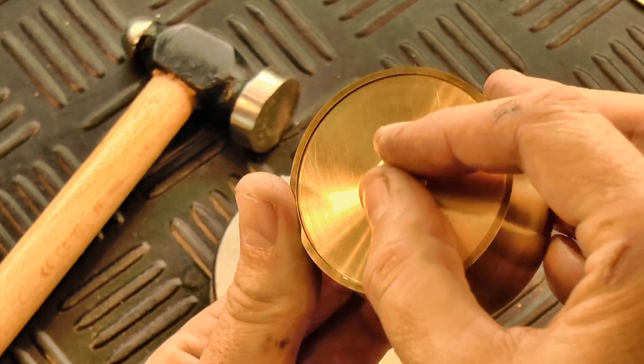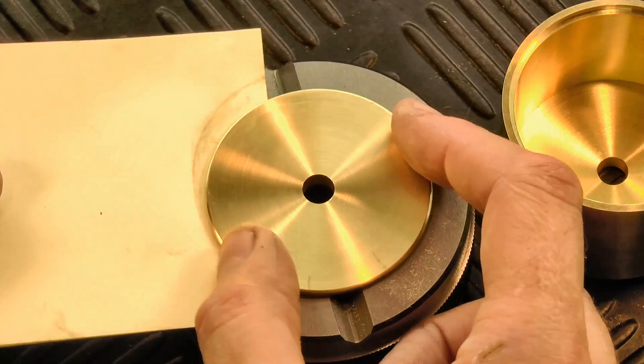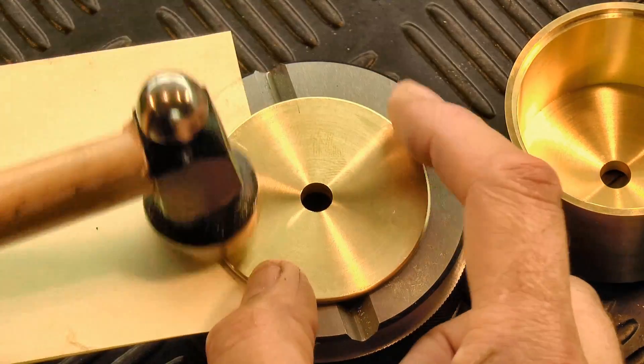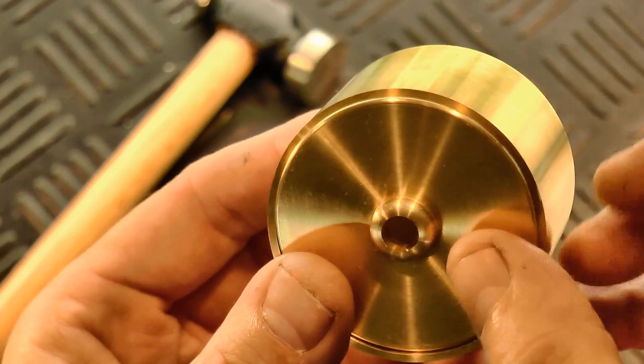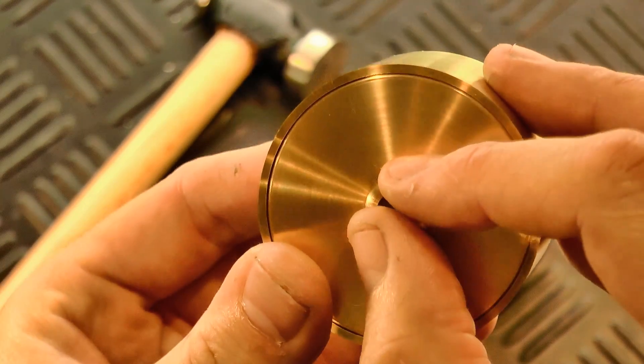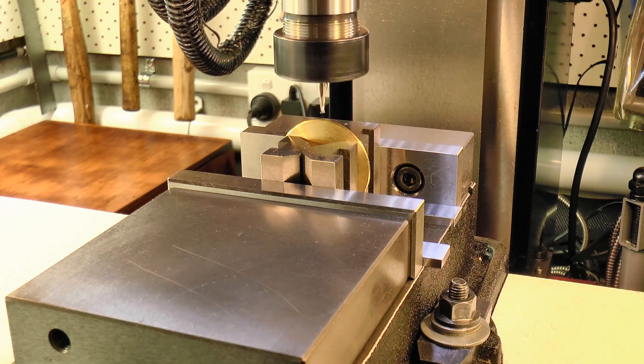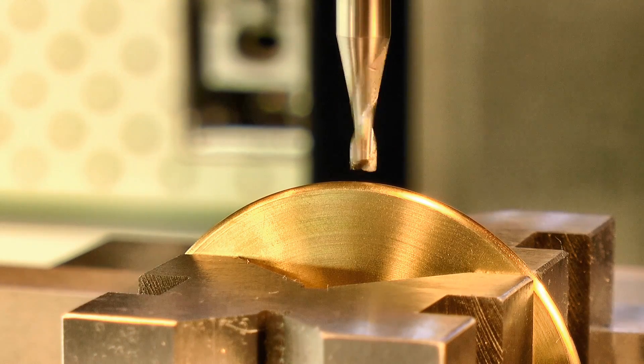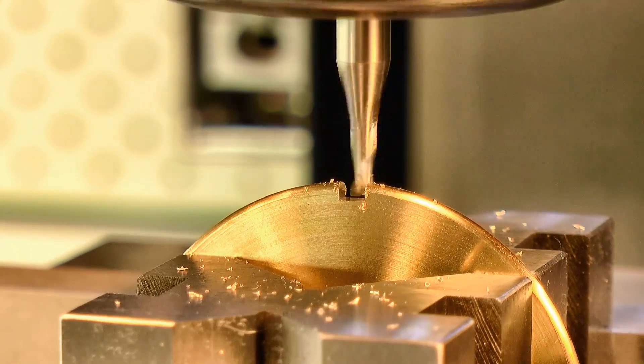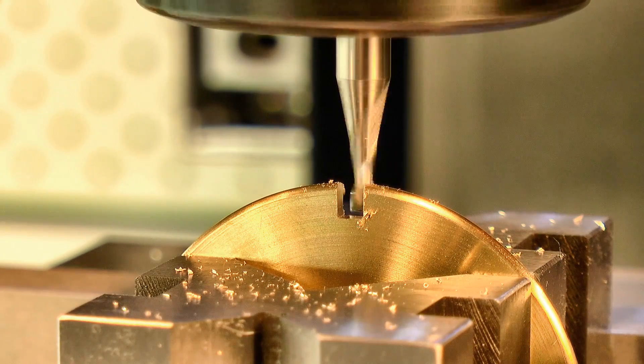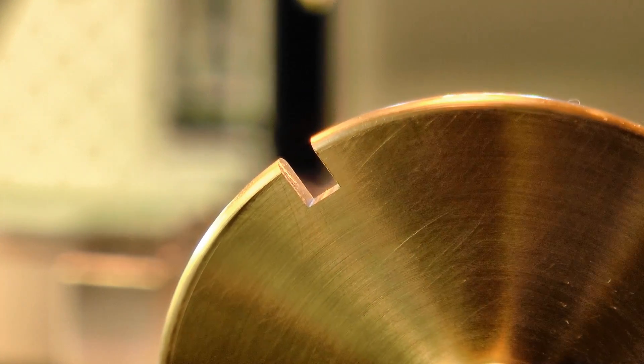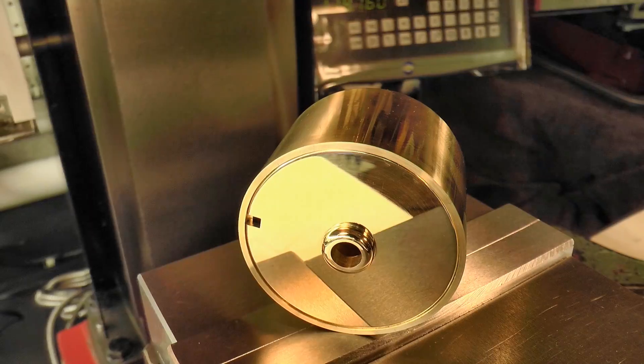Now the cap fit is ok, but it does have a slight amount of play in it, more than I'd like. The solution is to lightly hammer the perimeter to expand it a small amount. And after doing this, the fit is much improved. This cap also needs a little prizing slot cut into it, so it can be levered off the barrel when the clock is serviced. And that's the barrel done for now.